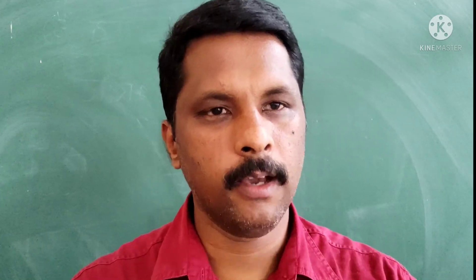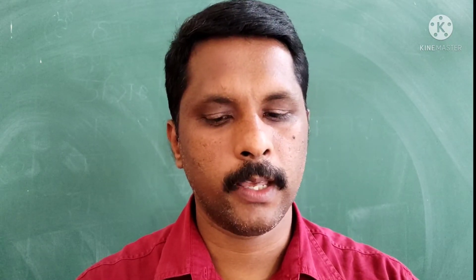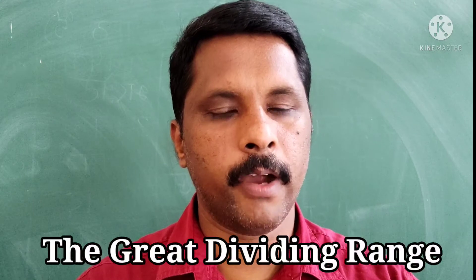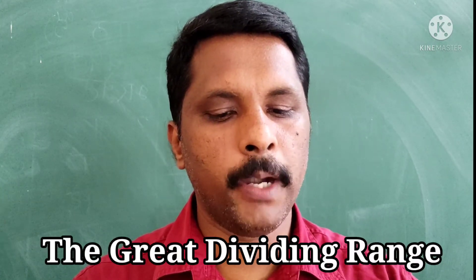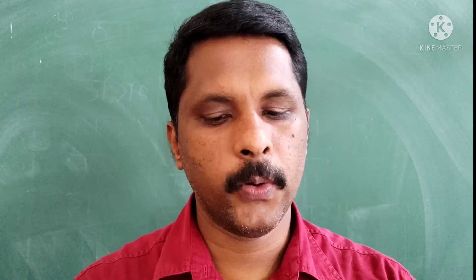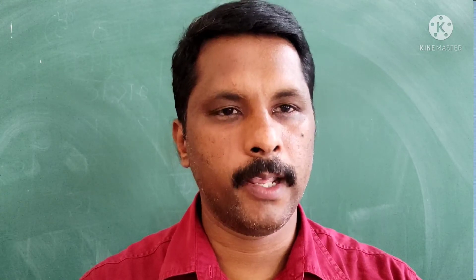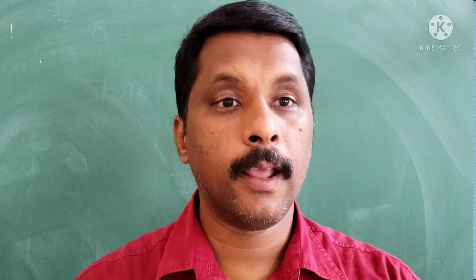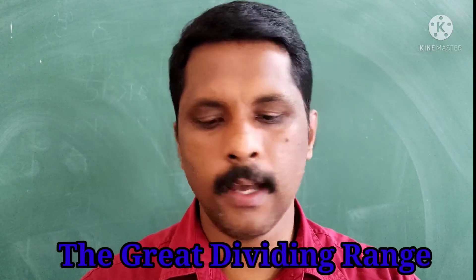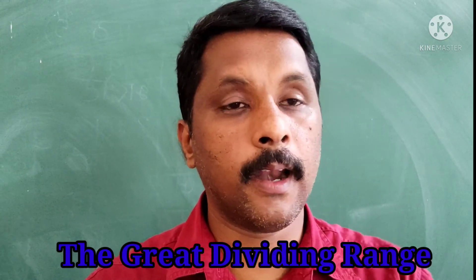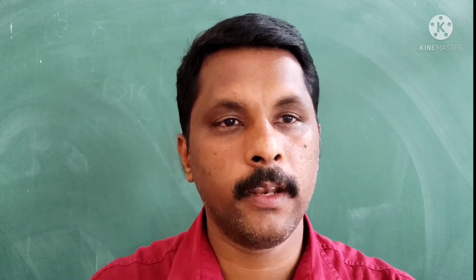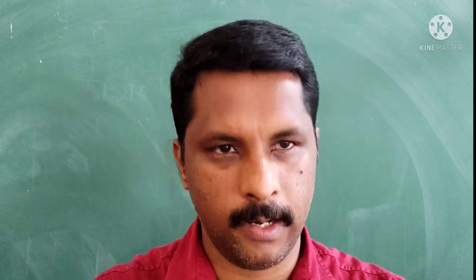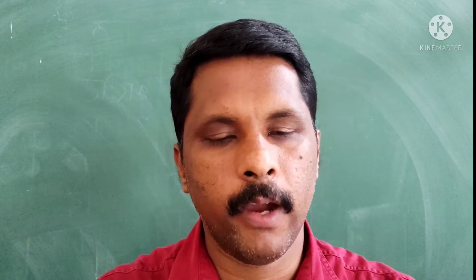The Great Dividing Range is located in the Eastern Highlands. It formed a formidable barrier to the early settlers — the early settlers were not able to enter the continent of Australia because of the presence of this mountain system on the eastern side, and it is known as the Great Dividing Range.